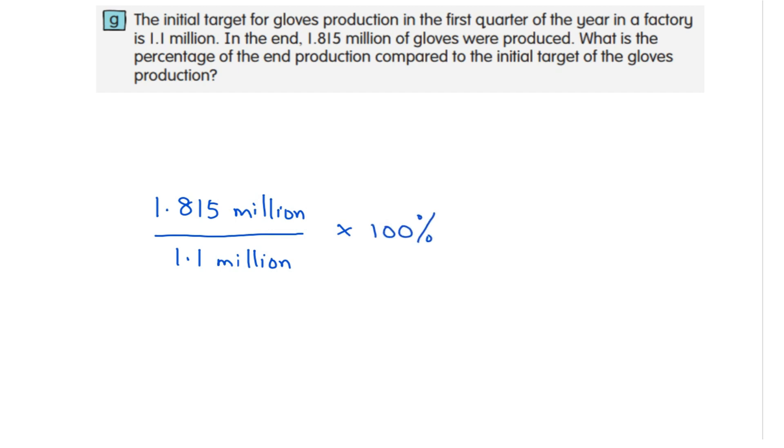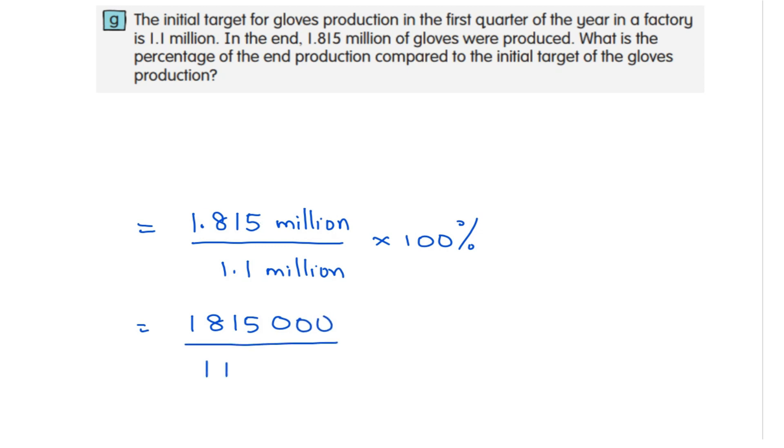Convert to whole numbers. We got 1.815 million over 1.1 million. Cancel the zeros.